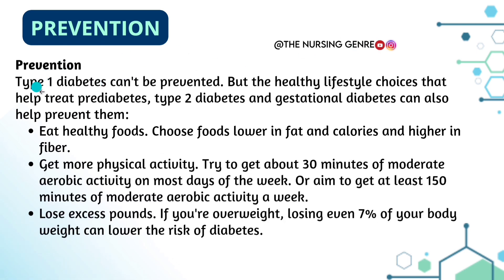Prevention: Type 1 diabetes cannot be prevented because it is an autoimmune disorder. However, healthy lifestyle choices that help treat pre-diabetes, type 2 diabetes, and gestational diabetes can also help prevent them. Prevention methods include eating healthy foods — choosing foods lower in fat and calories and higher in fiber.